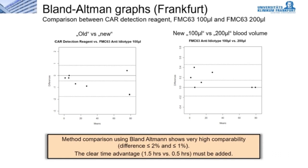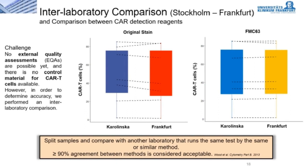The main challenge in establishing new diagnostic assays is that no external quality assessments (EQAs) are yet offered and no control material for CAR T-cells is available. Control material should be available in various concentrations for counting CAR T-cells by flow cytometry — analogous to whole blood controls for stem cell determination that do not require dilution and provide reference values similar to those found in humans. In order to determine accuracy in CAR T-cell detection, we performed a method comparison in the validation phase and an interlaboratory comparison with the Karolinska Institute in Sweden, showing highly comparable results with more than 90% agreement.